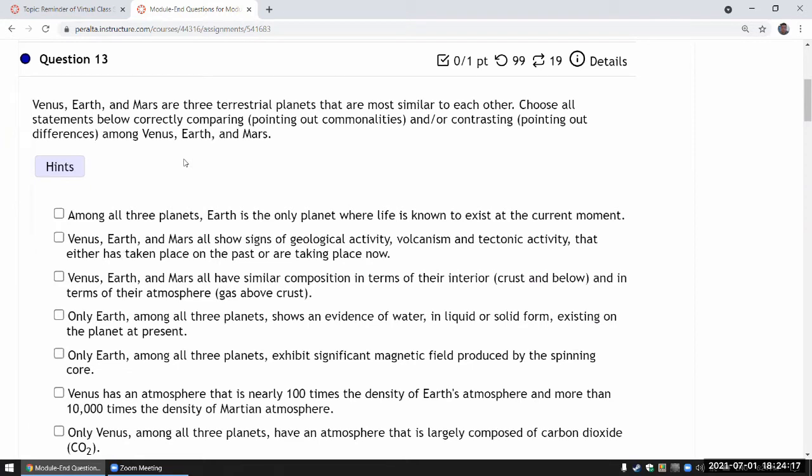So the question is about Venus, Earth, and Mars - I guess not Mercury because Mercury doesn't have an atmosphere. It's a little bit unlike Venus, Earth, and Mars. So these three planets are similar to each other.